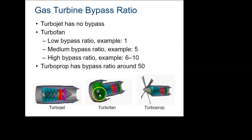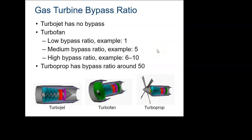Related to the turbofan is the turboprop. It has the turbojet core with a gearbox and a propeller attached. A turboprop has a very large bypass ratio — around 50. It's used for shorter-haul commercial airliners and smaller aircraft, and the reason you'd want one is greater fuel efficiency.